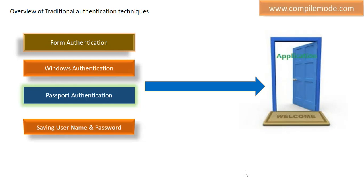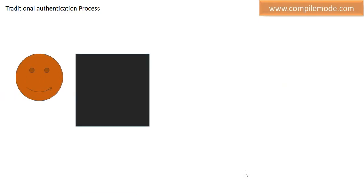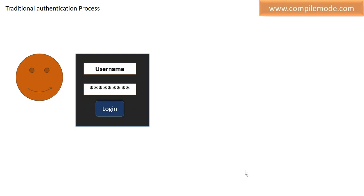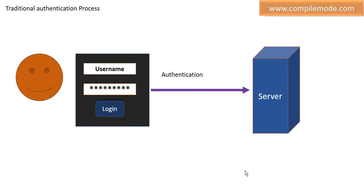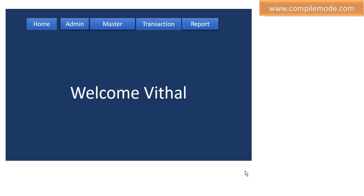Now, how does the traditional authentication process happen? First, the user initiates the request by entering a username and password and pressing the login button. Then the authentication process starts. It goes to the server. The server sends some data to the SQL database or any database. The database authenticates the details and sends back a response to the server. And then the user is authenticated successfully and it shows the welcome screen. This is a sample traditional authentication process to identify users.